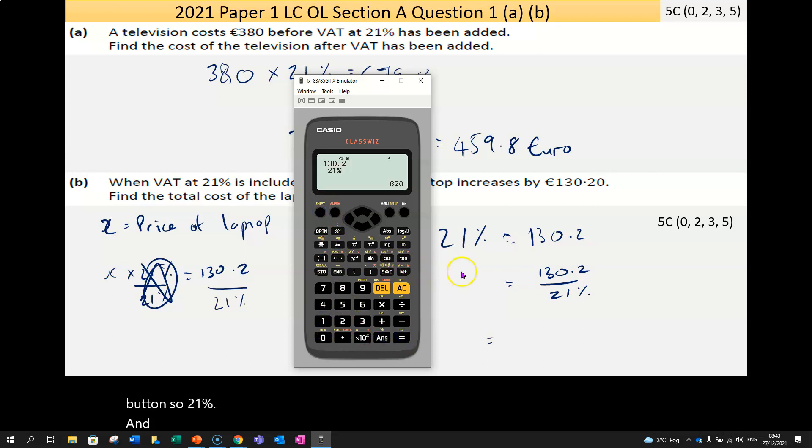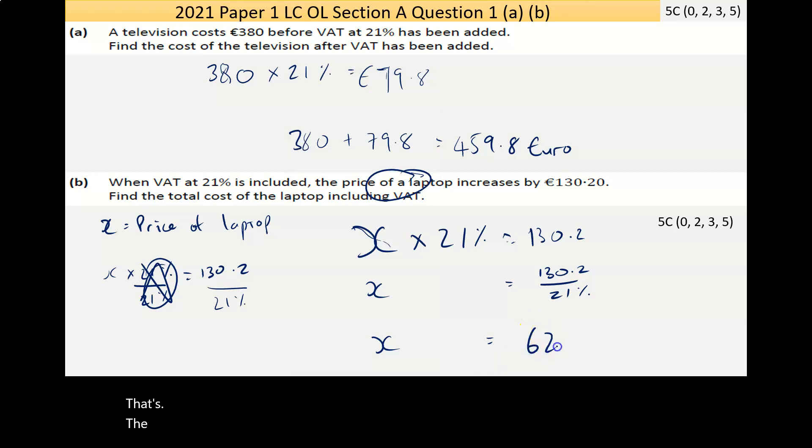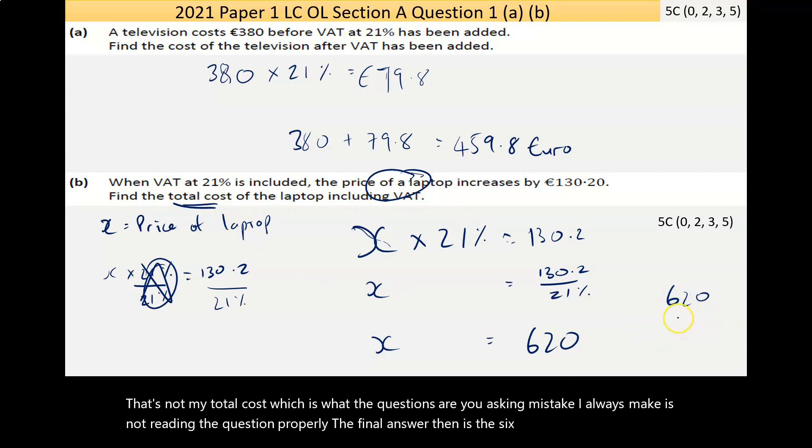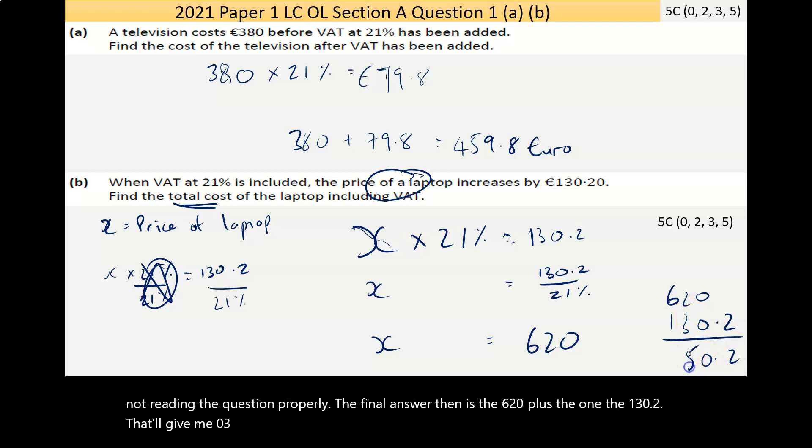I got €620. Now that's not my total cost, which is what the question is asking - the mistake I always make is not reading the question properly. The final answer then is the €620 plus the €130.2, and that'll give me €750.20. The laptop with VAT is €750.20.